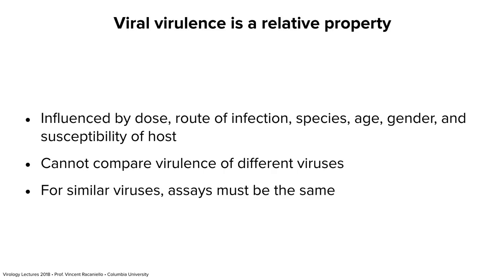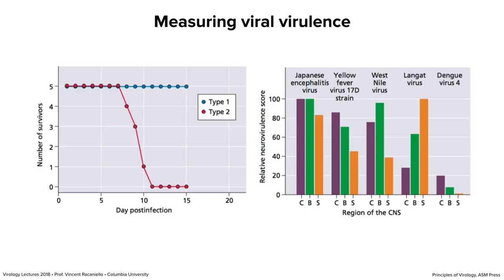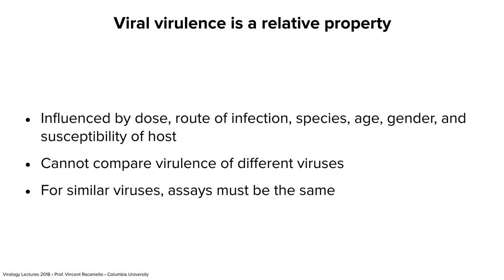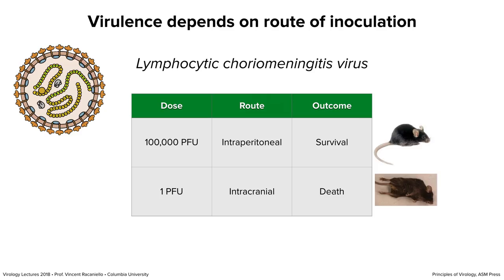If you want to compare two different polioviruses, they must both be inoculated intracerebrally into mice of the same age. Many parameters affect virulence so you have to minimize that variability. People always ask me what the most virulent virus is — you really can't answer that because it depends on so many things. If you want one number in people, the case fatality rate — number who died divided by number infected — is useful. Rabies is almost 100%, so I would say that's the most virulent virus we have.